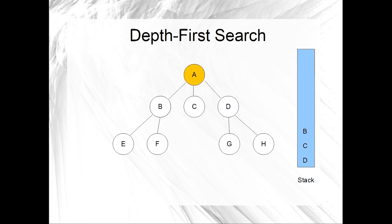Since the stack is not empty, we are going to have another iteration. That next iteration will begin by popping B off of the stack and marking it. Then we push all adjacent unmarked vertices onto the stack — in this case vertex F and vertex E. That ends this iteration of the loop.